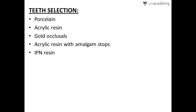IPN resin stands for interpenetrating polymer network and is a newer form of resin. Porcelain maintains vertical dimension and wears very slowly. However, the disadvantages of porcelain include fracture and chipping of natural teeth, since porcelain is much stronger than natural teeth. It is also difficult to equilibrate and cannot be used when the inter-occlusal distance is insufficient, as porcelain requires considerable space.